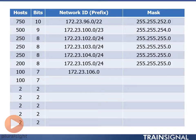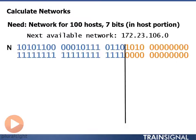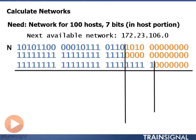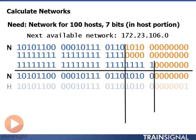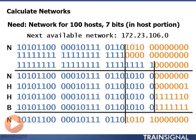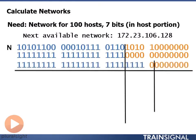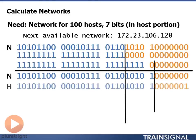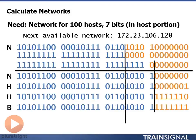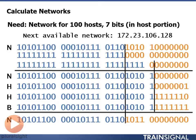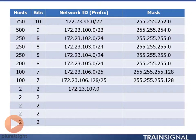Moving on, we're at 172.23.106.0, and this time we need 7 bits in the host portion, so we go back to our binary, put 7 bits in the host portion, fill the rest of our mask with 1s — this time our mask is a /25. We find the first host, last host, and broadcast, add 1 to the broadcast to get the next available network, convert to decimal, and fill in our table. 172.23.106.128 is our next available network. We calculate the /25 mask again, take that network, find the first host, last host, and broadcast, add 1 to the broadcast, and we're now at 172.23.107.0.